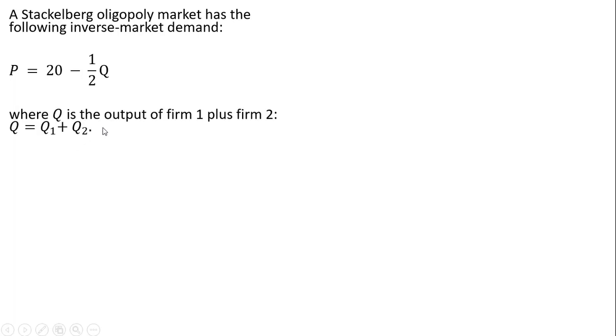Where Q, the market output, is comprised of Firm 1's output plus Firm 2's output, where the subscript represents the firm. Making a substitution for Q, we write Firm 1's output plus Firm 2's output in parentheses.